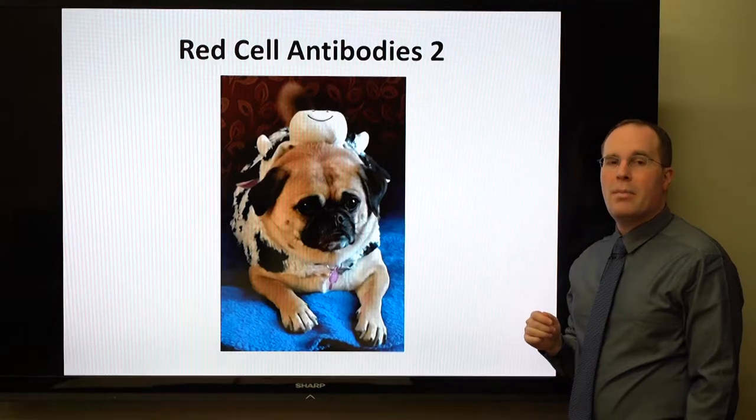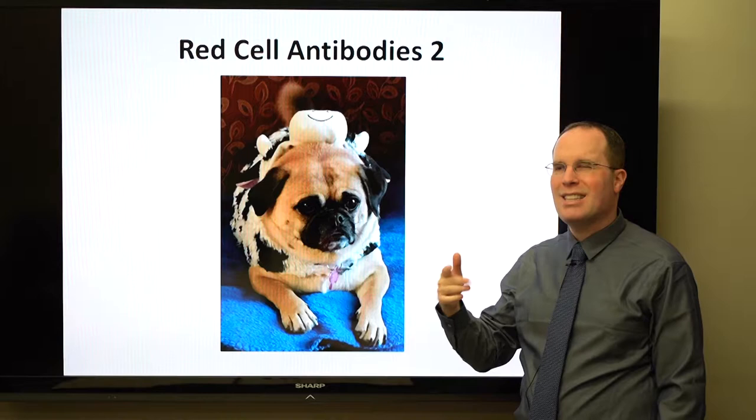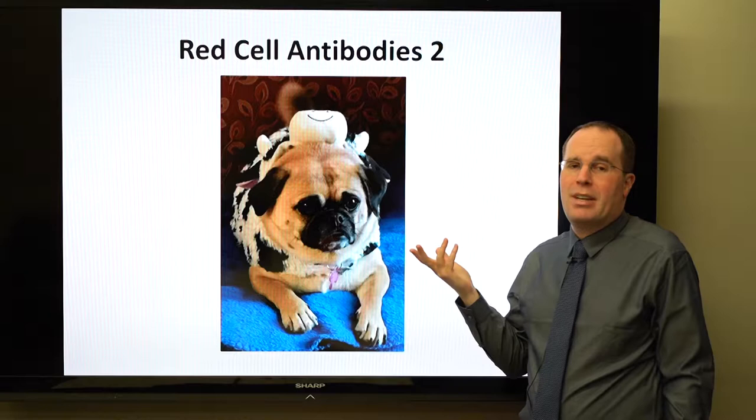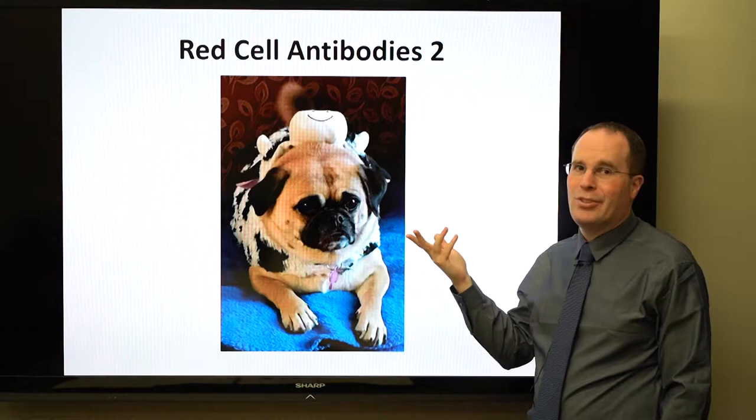Welcome back to Red Cell Antibodies Part 2. We got a cow Halloween costume for Piggy because Piggy likes eating grass. Unlike the typical dog that eats grass and vomits it back up, Piggy keeps it down. So it's a little funny that there's a dog named Piggy, named after a pig, that acts like a cow and is dressed like a cow.